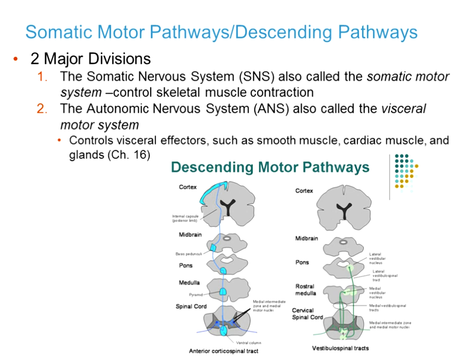Descending pathways carry efferent signals — muscle contraction signals, smooth muscle dilation/contraction signals, and gland secretion signals. The voluntary somatic motor system comes down from the primary motor cortex of the frontal lobe (precentral gyrus). Autonomics, controlling smooth muscle and glands, originate mostly in the brainstem — the medulla area — rather than the cerebral cortex.